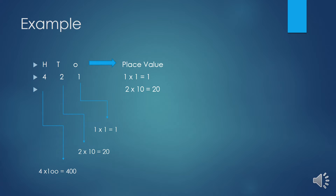Aap dekhi hai wo ones, tens and hundred. Ones, tens, hundred given hai — right hand side se count ho. Agar ones place pe one hai, to one multiply one is equal to one. Or two tens place pe, to two multiply by ten is equal to twenty. And hundred — four multiply by hundred is equal to four hundred.